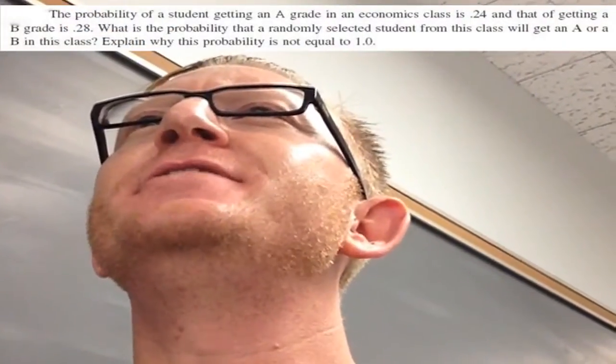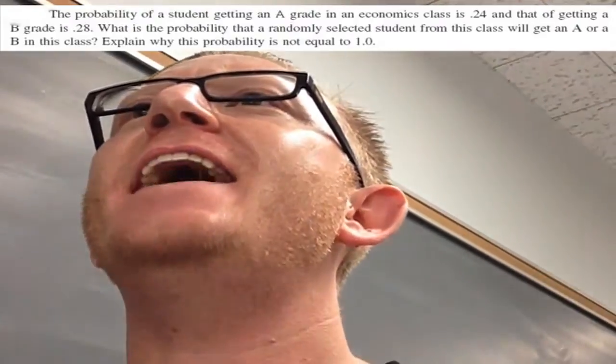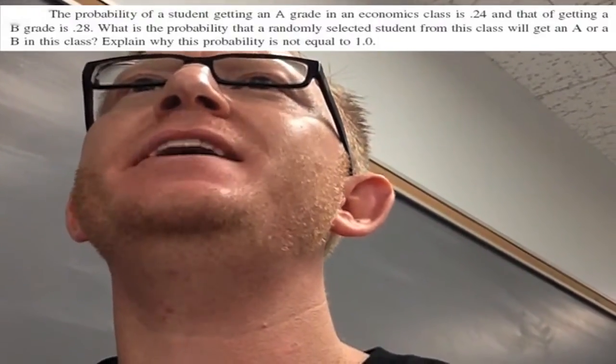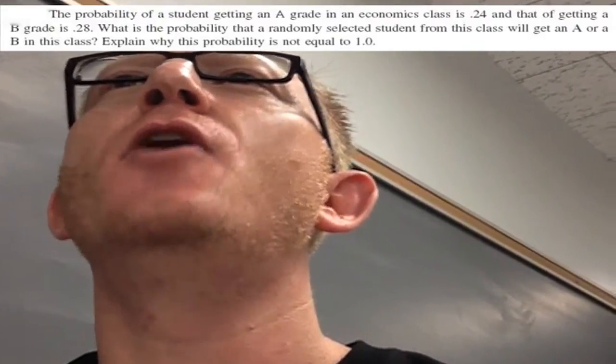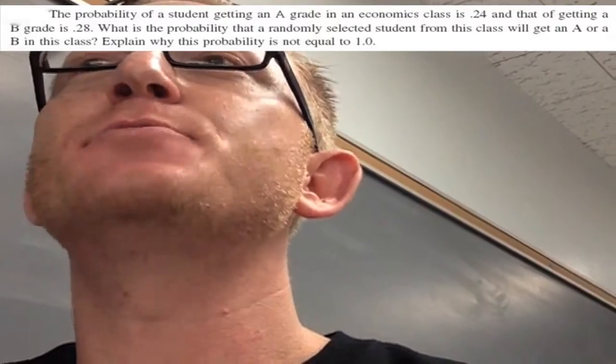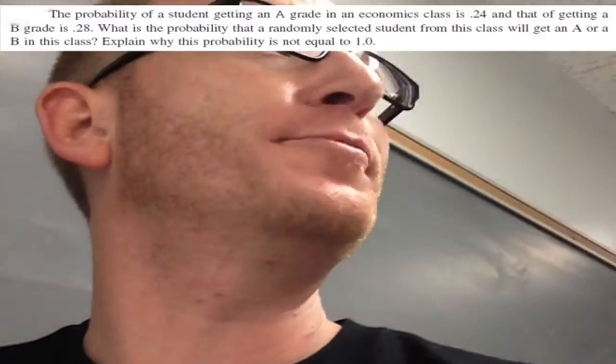The probability of a student getting an A in an economics class is 0.24, and the probability of getting a B is 0.28. What is the probability that a randomly selected student from this class will get an A or B?